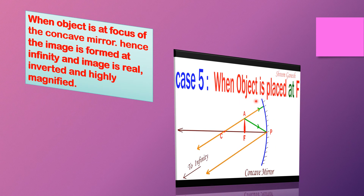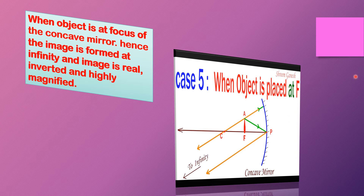Case five: when the object is placed at F, that is at the focus. When the object is at the focus of the concave mirror, the image is formed at infinity. These are all parallel rays — the object is at focus, so the image is formed at infinity. That is why we cannot see the image.